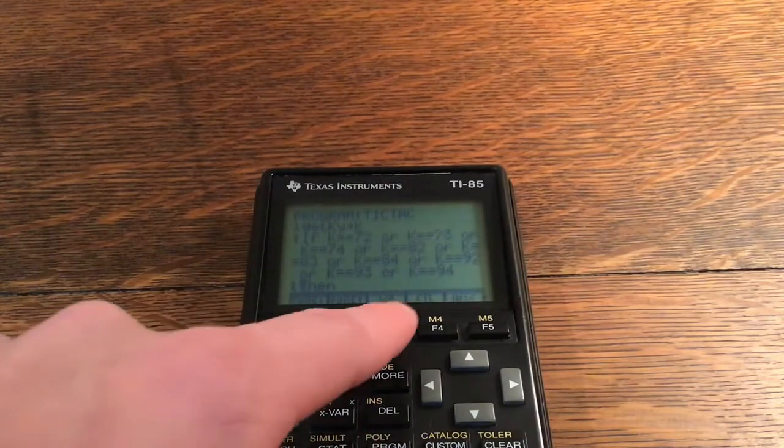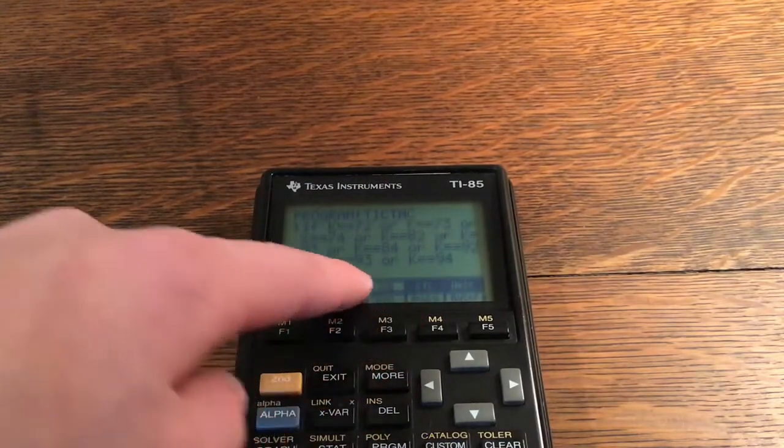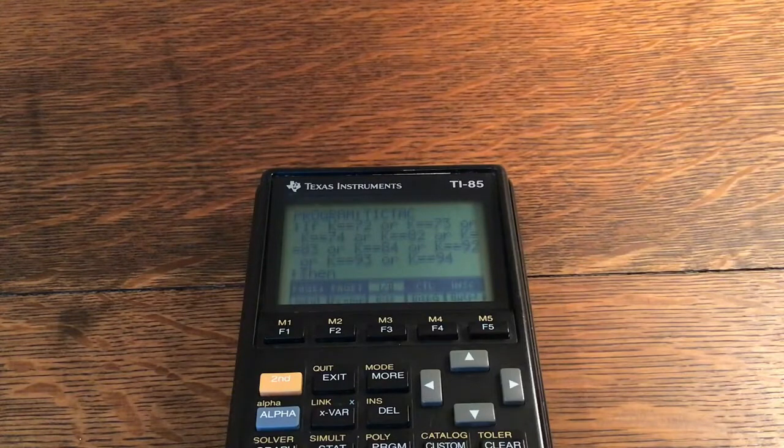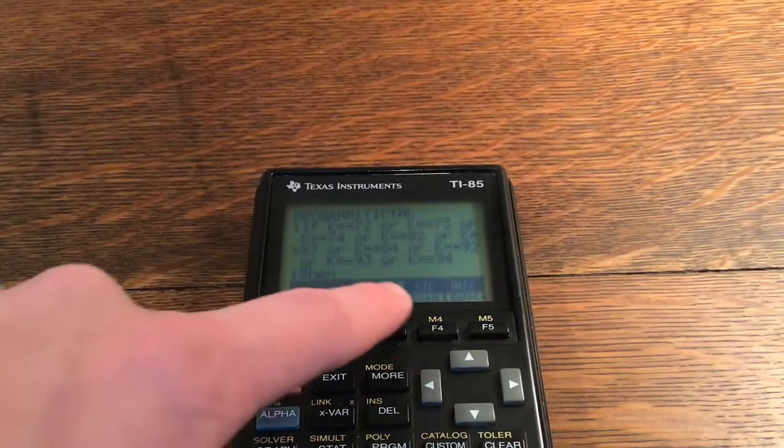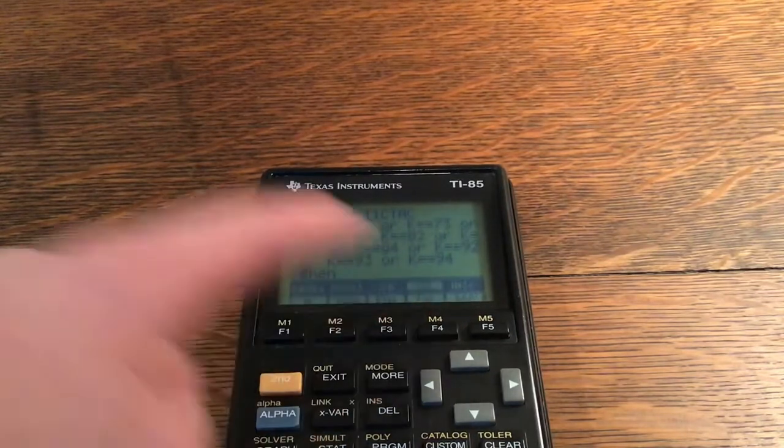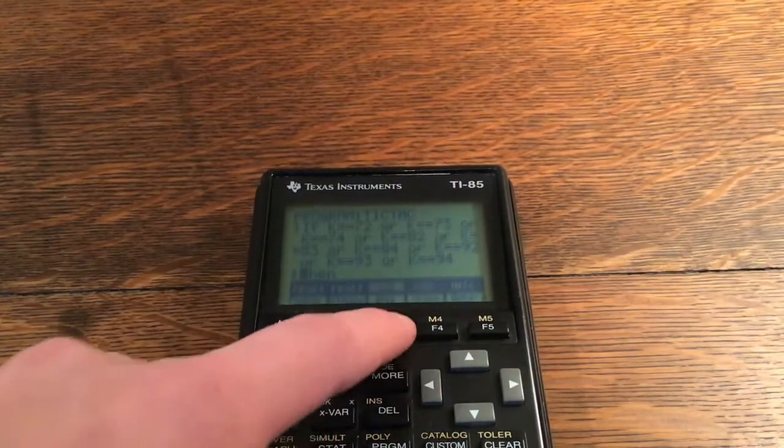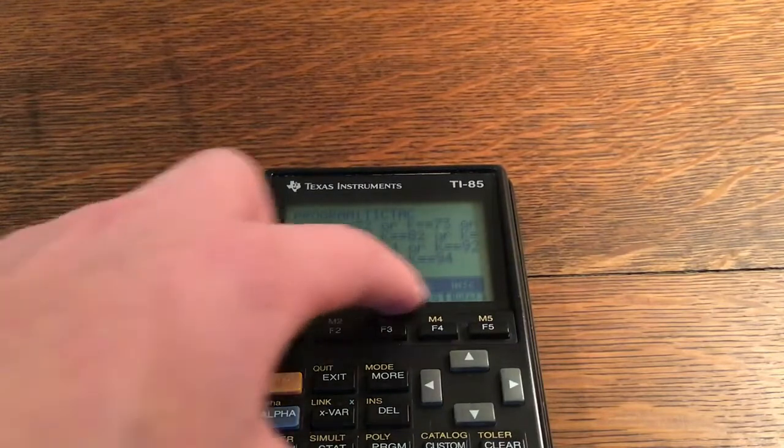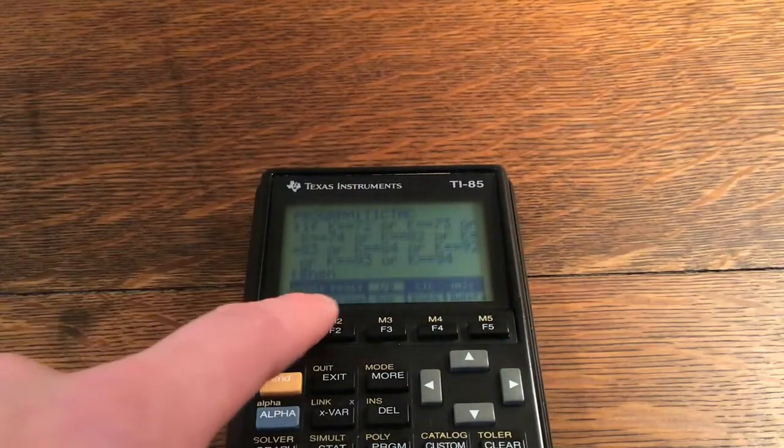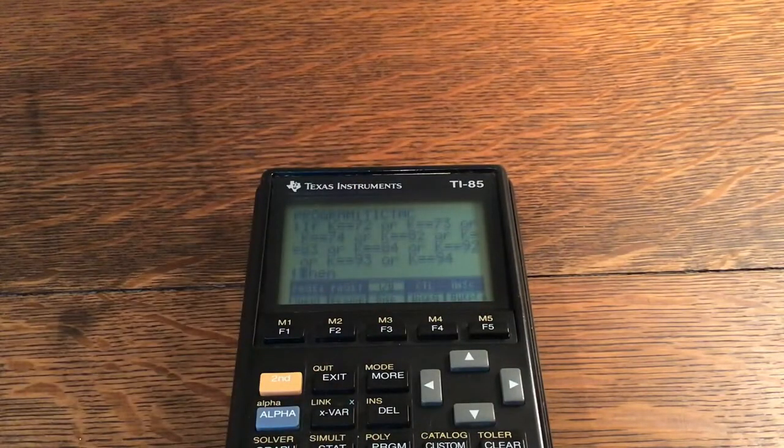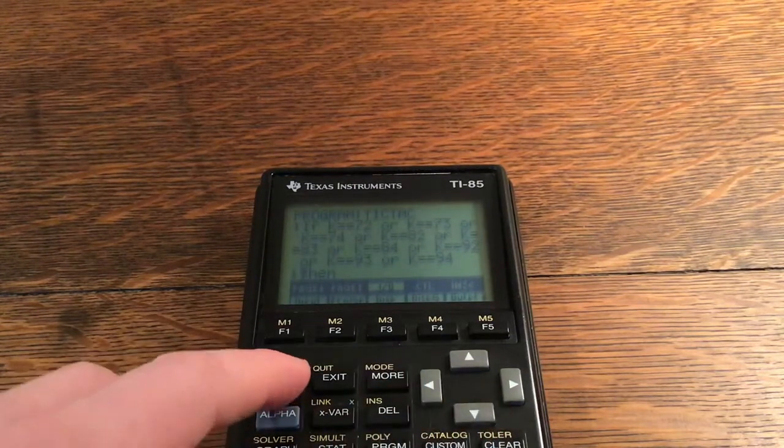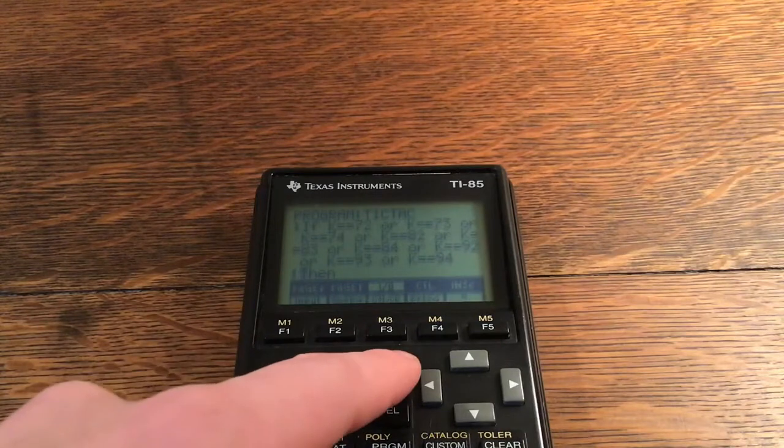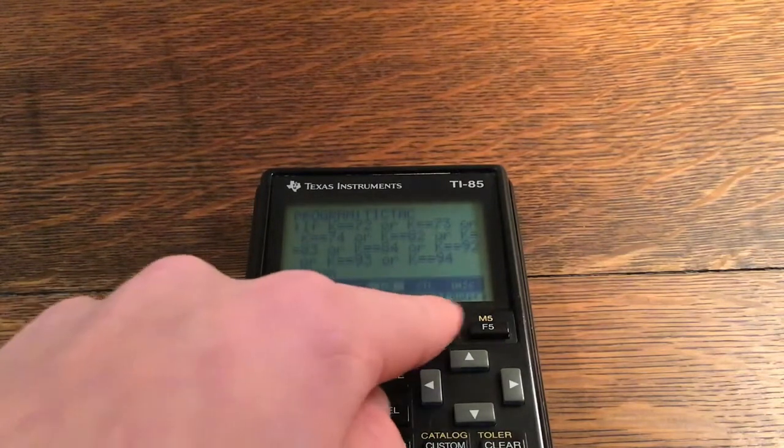To get normal programming stuff, remember you click F3 and that'll take you to the IO tab. If you want to switch tabs like the IO tab to the Control, then you click Second and then whatever tab you want to go to. There it went to the Control, there goes to IO. And if you want a command that's below, you just click the F1, F2, so you don't click Second before you use it.